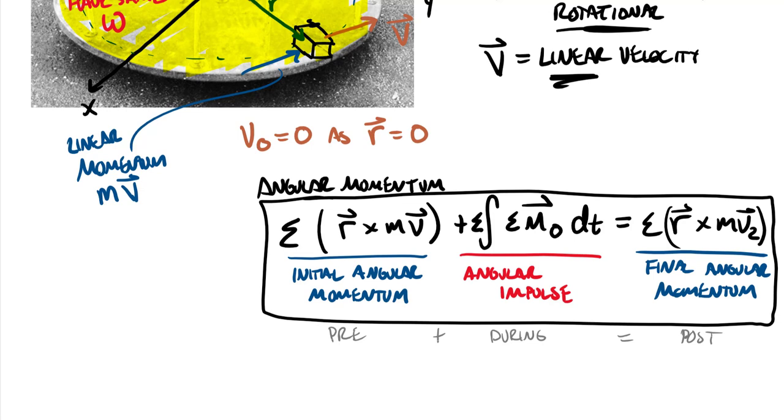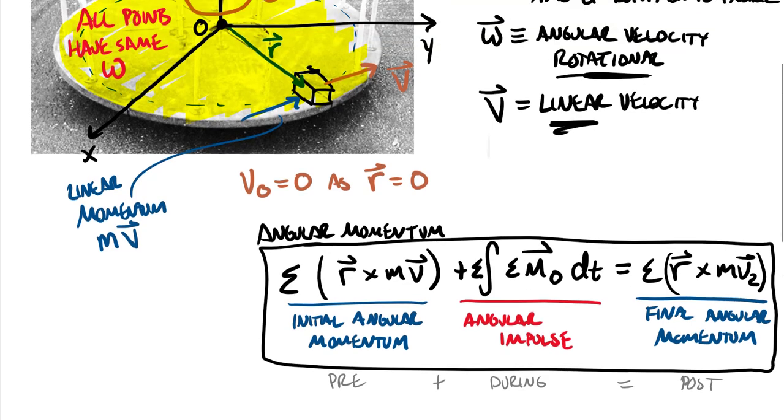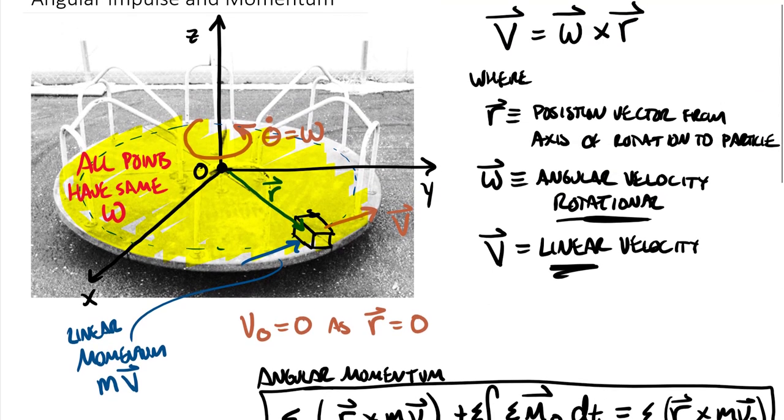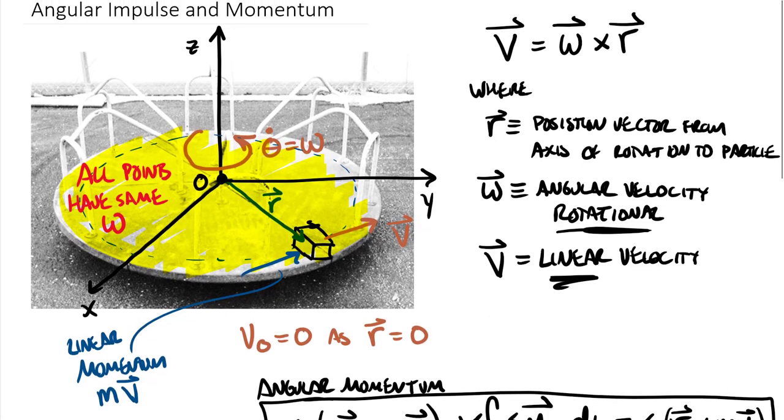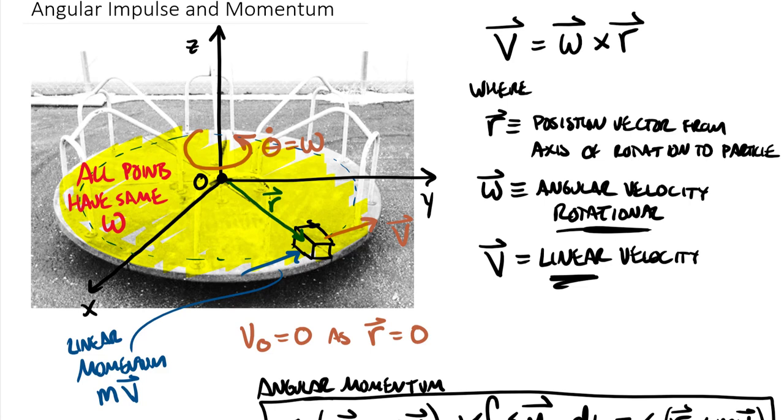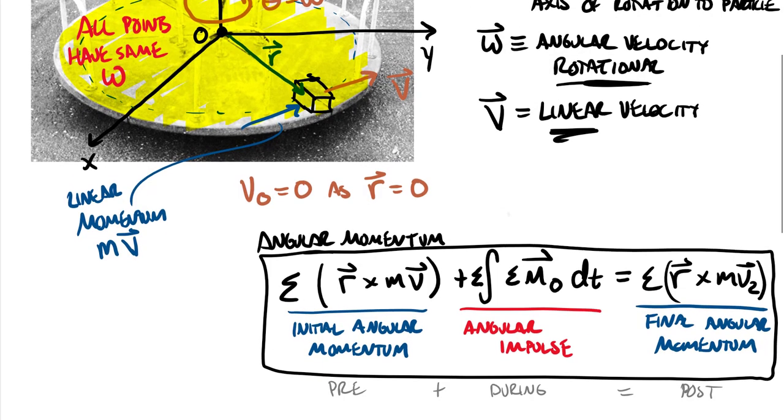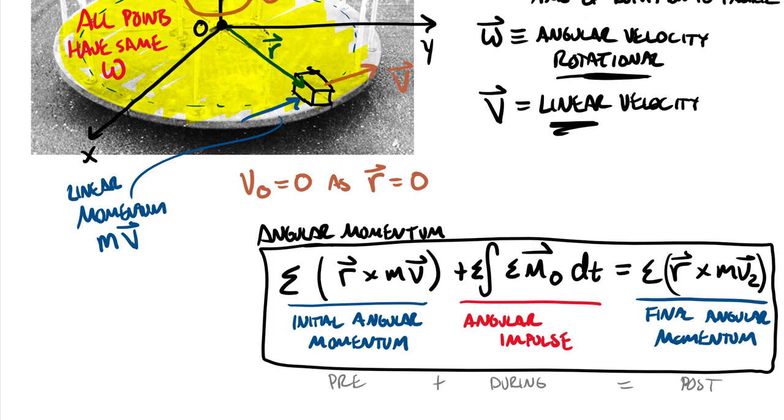Because this is a vector equation, on the predominantly two-dimensional problems we're going to be evaluating, we're really just going to be worried about not only momentum around the z axis, but also impulse around the z axis. In the vector equation, we want to match up our momentum direction in addition to our impulse direction. Let's look at applying this equation to an example problem.